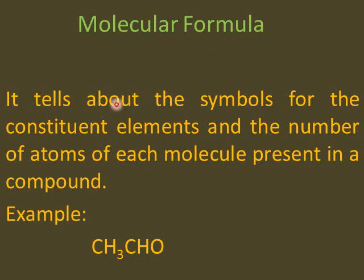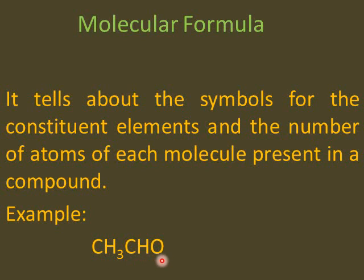Now, the molecular formula tells us about the symbols for the constituent elements and the number of atoms of each element present in a compound. Like here, I can easily tell you that in this compound I have two carbons, four hydrogens, and one oxygen. The symbol of the elements shows that they are carbon, hydrogen, and oxygen — so it is an organic compound. Molecular formula and structural formula help a lot in forming isomers.